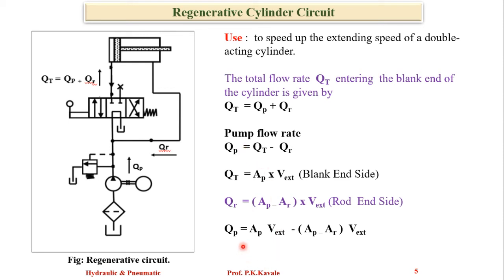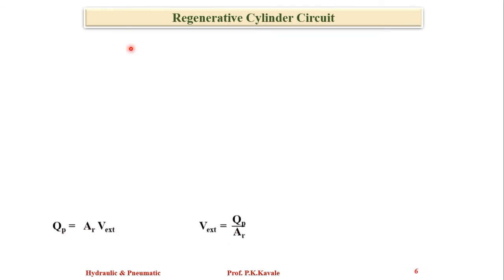We put these two values into the equation. We get Qp equals Ar times Vext. What does Ar mean here? It's the cross-sectional area of the rod. Now, Vext equals Qp divided by Ar.